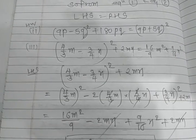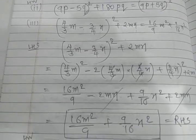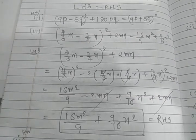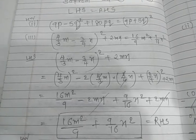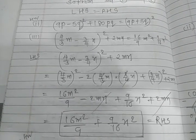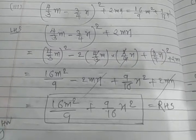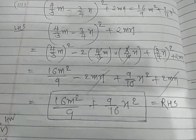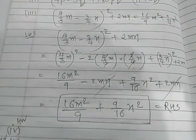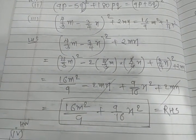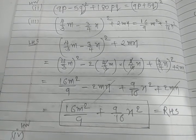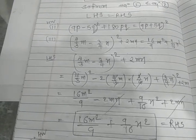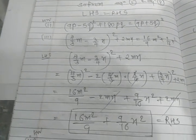Question number two is homework. Question number three I am doing over here: four upon three m minus three upon four n whole square plus two mn is equal to sixteen upon nine m square plus nine upon sixteen n square. So aap pehle LHS lijeye, simplify kijiye, you will get this answer. So aap ka answer yaha LHS kero toh no direct hiya jayega RHS. Sometimes when you LHS your answer will get RHS, sometimes you do RHS you will get LHS answer like this way.